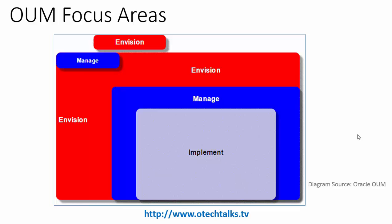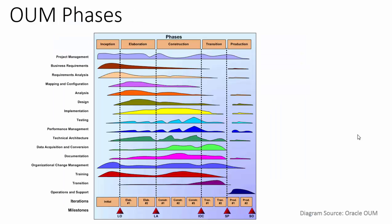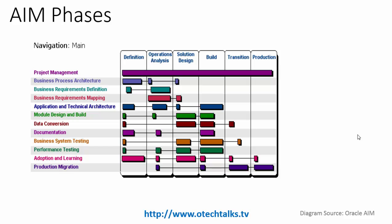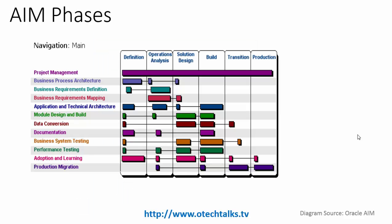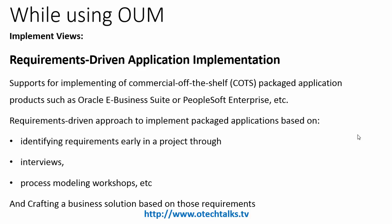The OUM phases are: Inception, Elaboration, Construction, Transition, and Production. Comparing this to AIM, which used: Definition, Operations Analysis, Solution Design, Build, Transition, and Production. OUM changed the entire phase names and the tasks within each phase. You can also see different workstreams such as project management and business requirements mapped across these phases.